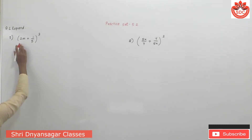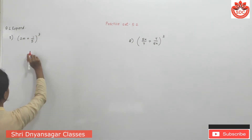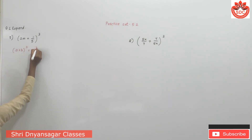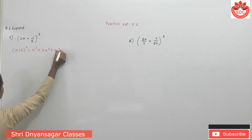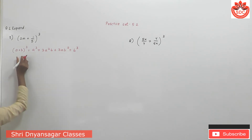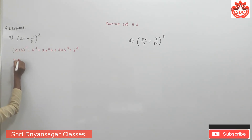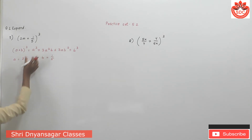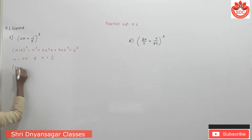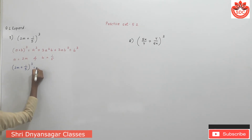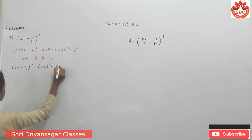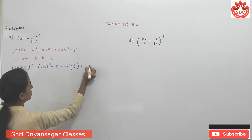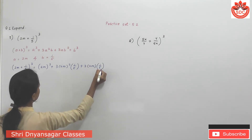Question number 7: expand (2n + 1/5)³ using the formula (a + b)³ = a³ + 3a²b + 3ab² + b³. Here, a = 2n and b = 1/5. Putting the values in the formula, we get (2n + 1/5)³ = (2n)³ + 3(2n)² × (1/5) + 3 × 2n × (1/5)².